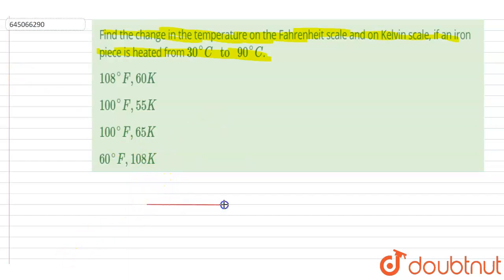T minus lower point upon the upper fixed point minus lower fixed point. What are the lower fixed point and upper fixed point? These are the points at which it shows the melting temperature of the ice and vaporizing temperature of the water, right?